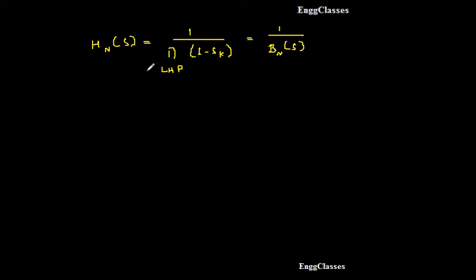So now, as per this formula, I will write H_1 of S. Why? Because I am considering it for the first order. 1 divided by product term LHP, that is left half plane poles, S minus S_0 which is equal to 1 divided by B_1 of S.